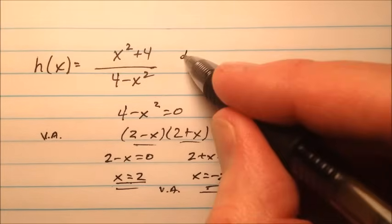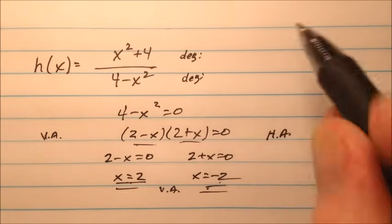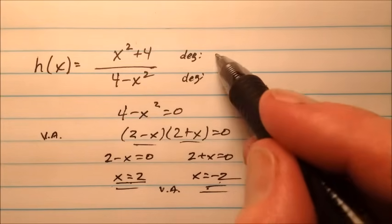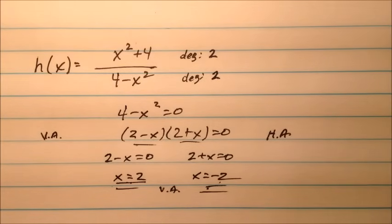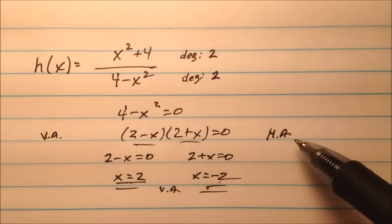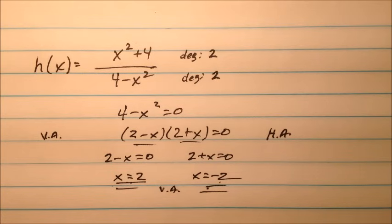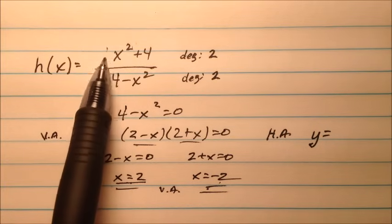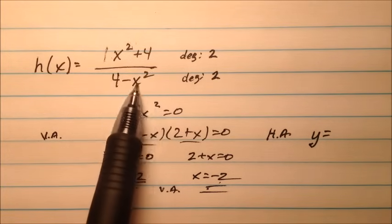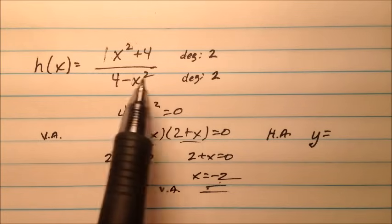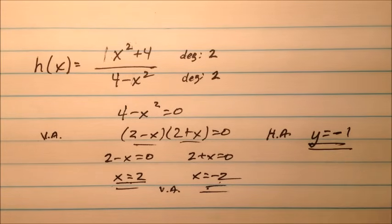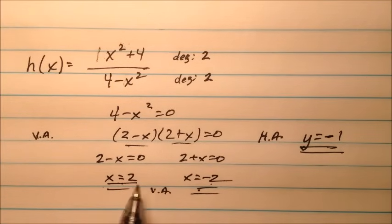Looking at the degrees for the horizontal asymptote: the numerator's degree is 2 and the denominator's degree is 2 — they're the same. So we take y equals the ratio of the leading coefficients. x squared has coefficient 1, and negative x squared has coefficient negative 1, giving 1 over negative 1, which is negative 1. So this example has three asymptotes: two vertical and a horizontal asymptote at y equals negative 1.